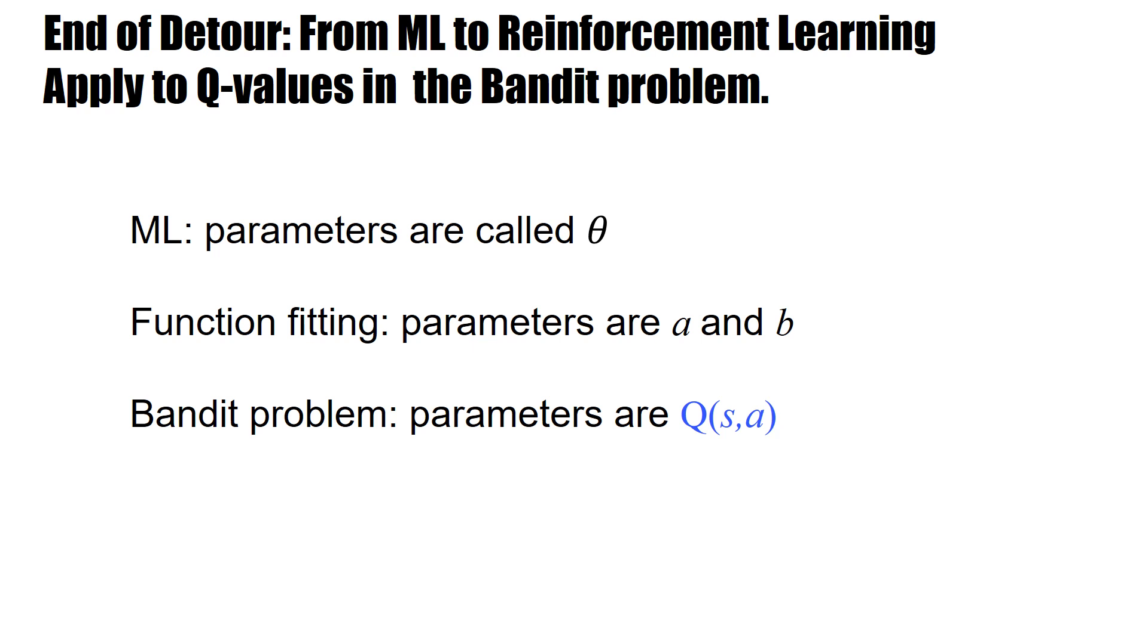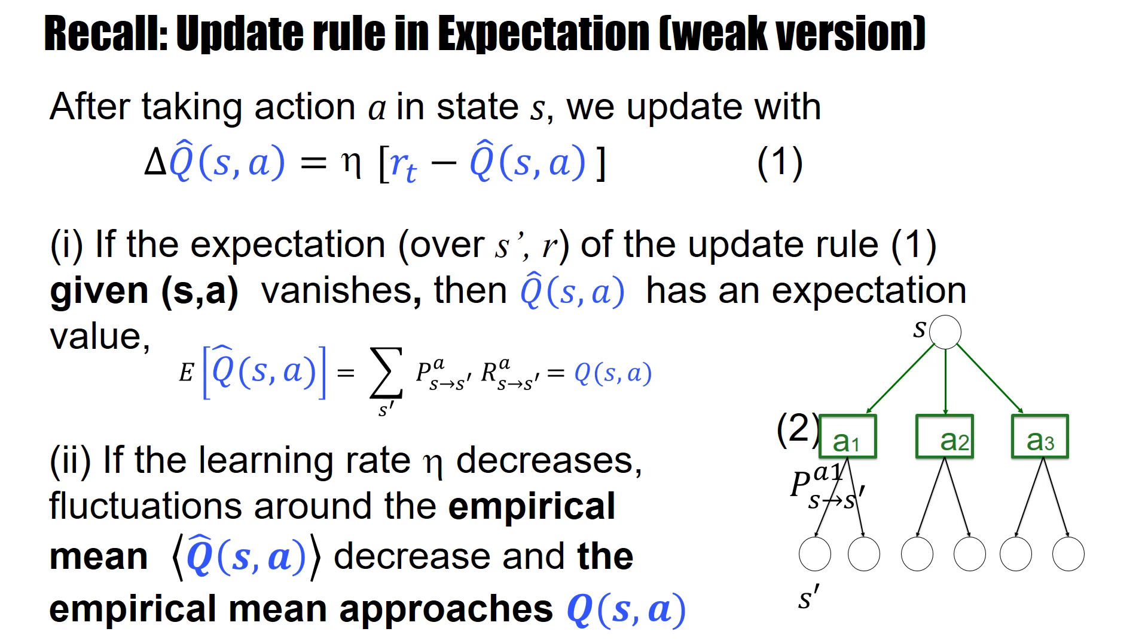In machine learning parameters are called theta. In the specific case of function fitting our parameters were A and B. Now we considered Q learning for the case of the Bandit problem and here the parameters are Q. Here's again the update rule equation 1. The change depends on the difference between the momentary reward at time t and my current estimate of the Q values.